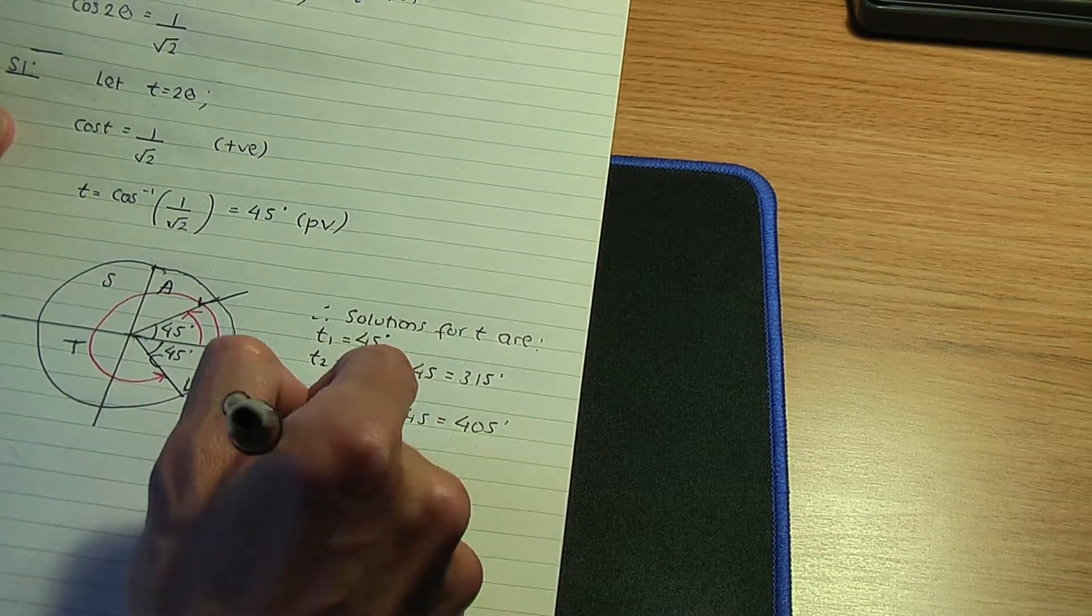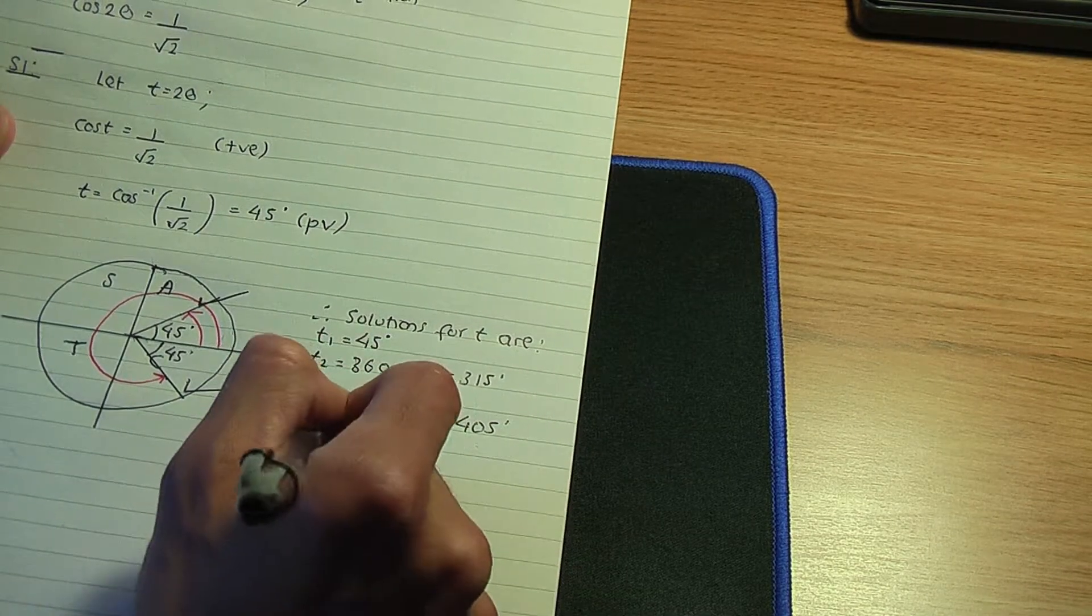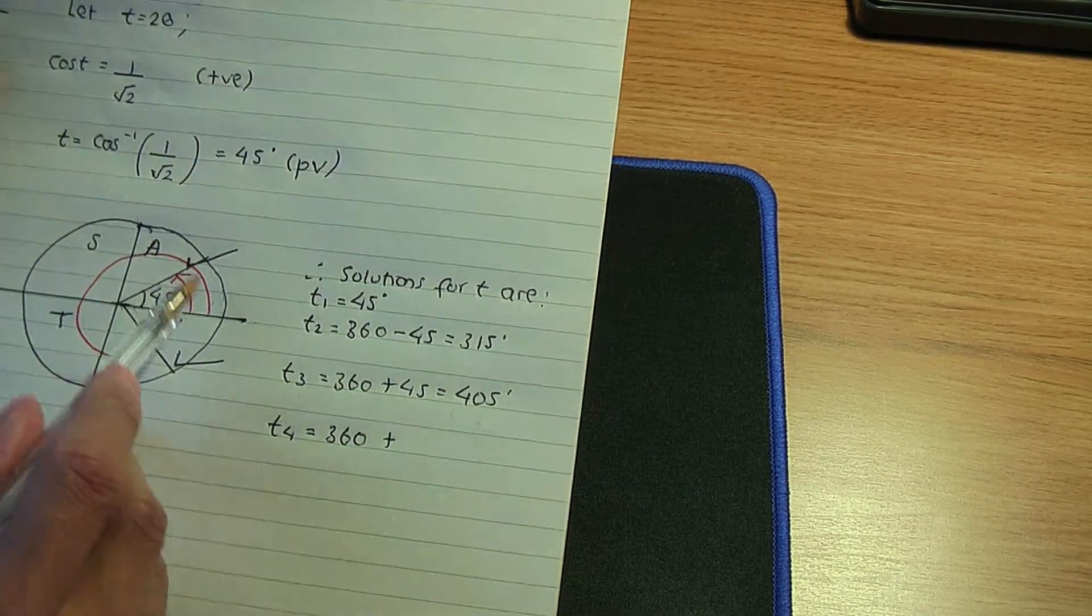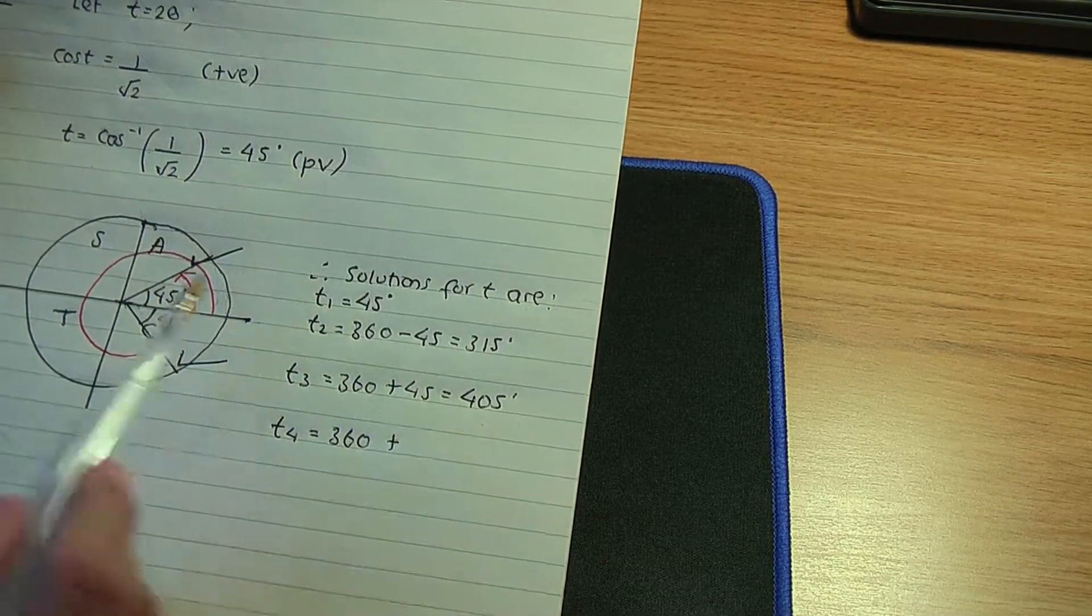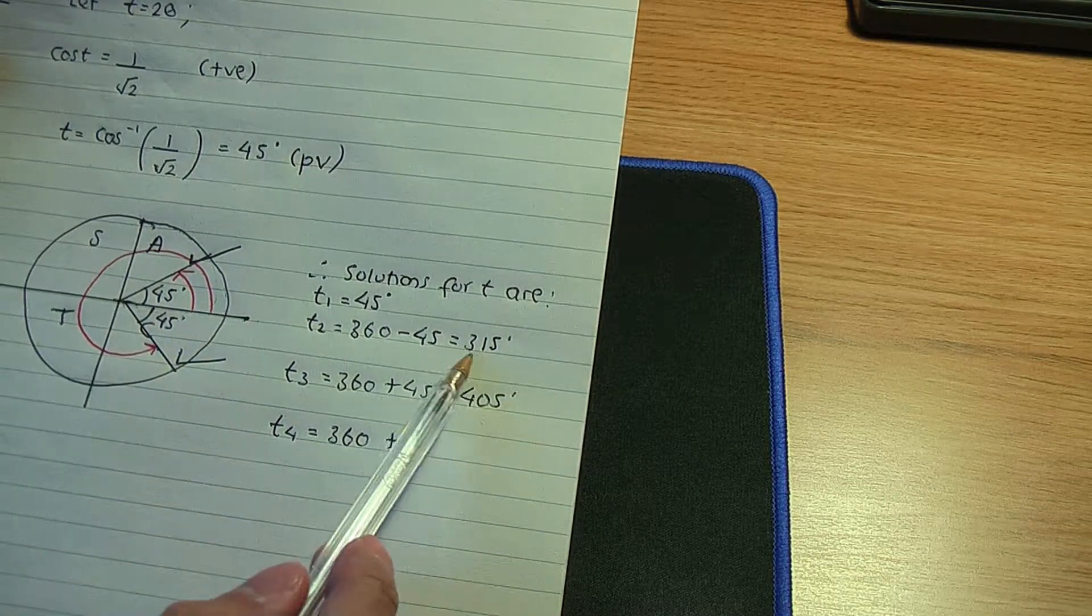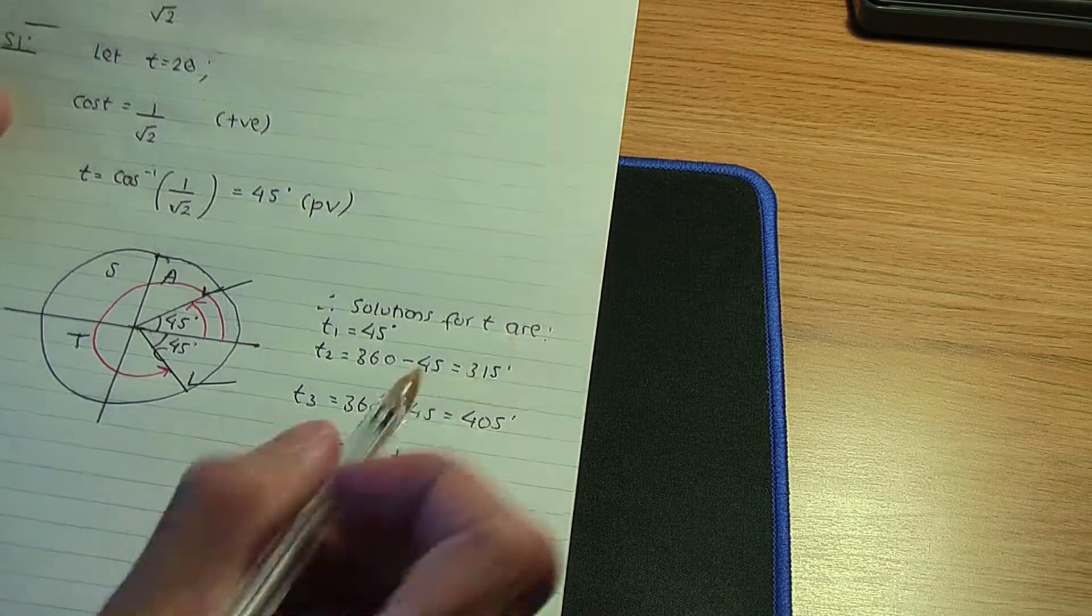And if you think about it, 405 divided by 2, so remember to calculate theta you need to divide the t solutions by 2, that is 202.5.